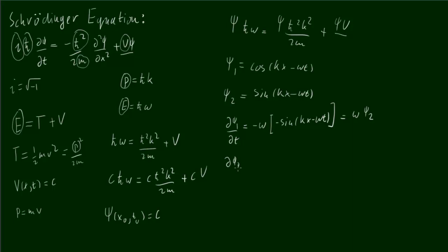Now, for psi 2, we do the same thing. And we end up with minus omega multiplied by cos(kx minus omega t). And again, we notice that this is just minus omega multiplied by psi 1.